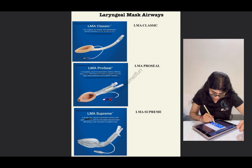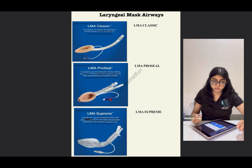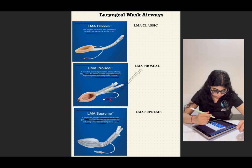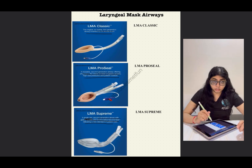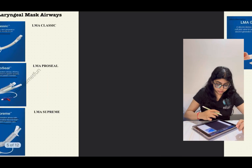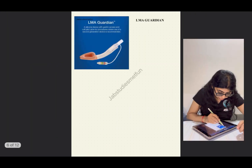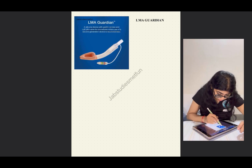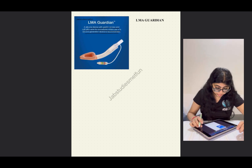The LMA Supreme is a single-use second-generation airway with gastric access and an innovative second seal delivering a new standard of patient care. The LMA Guardian is a silicone device with gastric access and a cuff pilot valve, recommended for procedures where a second-generation device is indicated. Remember: LMA Classic and ProSeal are reusable; LMA Supreme is single use.